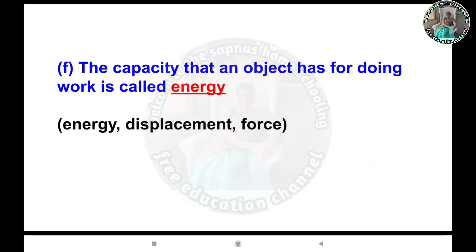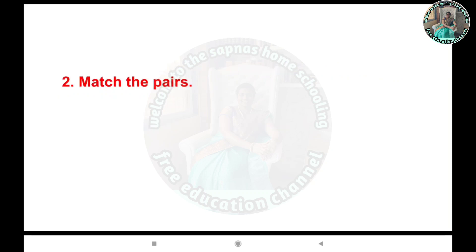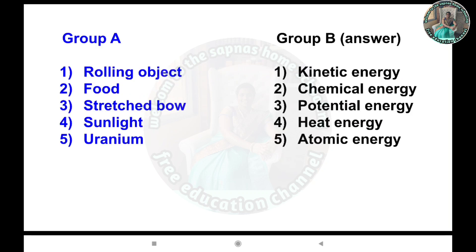F: The capacity that an object has for doing work is called energy. Question 2 - Match the pair, Group A and Group B: The rolling object has kinetic energy, food has chemical energy, a stretched bow has potential energy, sunlight has heat energy, and uranium has atomic energy.